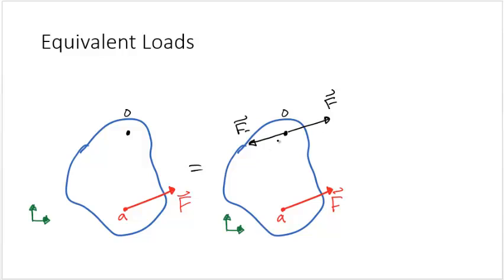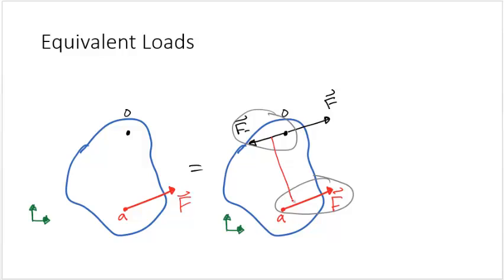The interesting thing is that what we've introduced here is a force couple. We can see that the force F at O is equal and opposite to the force at A, and since they are non-colinear, this creates a force couple. The magnitude of this force couple is given by the perpendicular distance between the two force components.